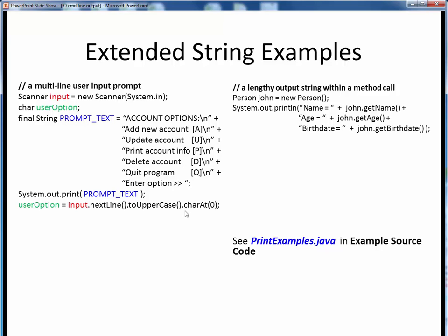This next line might look kind of strange because of the multiple dot notation involved. But what we're trying to do here is make sure that we are returning a capital letter for the user input. So if we break this down left to right, we're first reading in an entire line as a string, then applying the toUpperCase method to that string, which results in yet another string, and finally peeling off the first character using charAt0. So when all is said and done, this entire right-hand expression evaluates to one single uppercase letter, which is what we want read into the user option char variable.